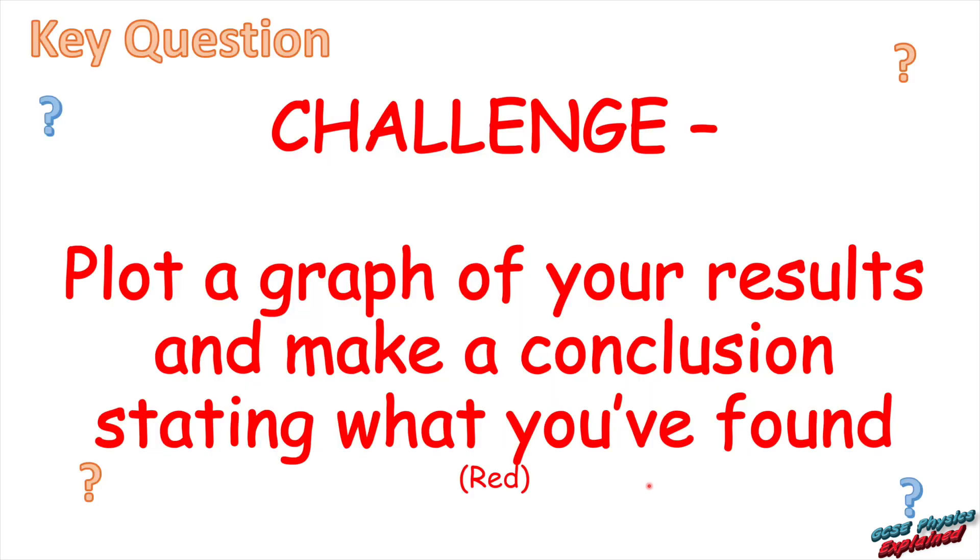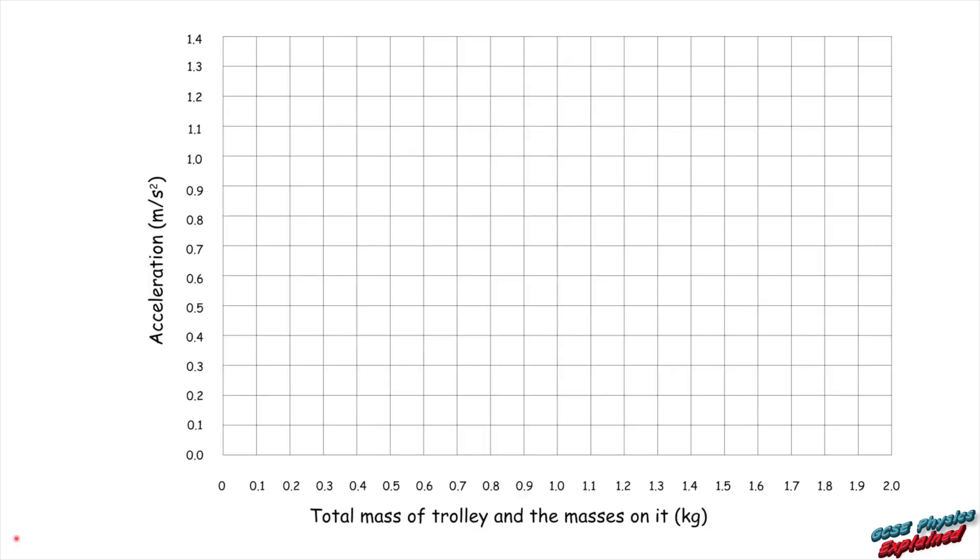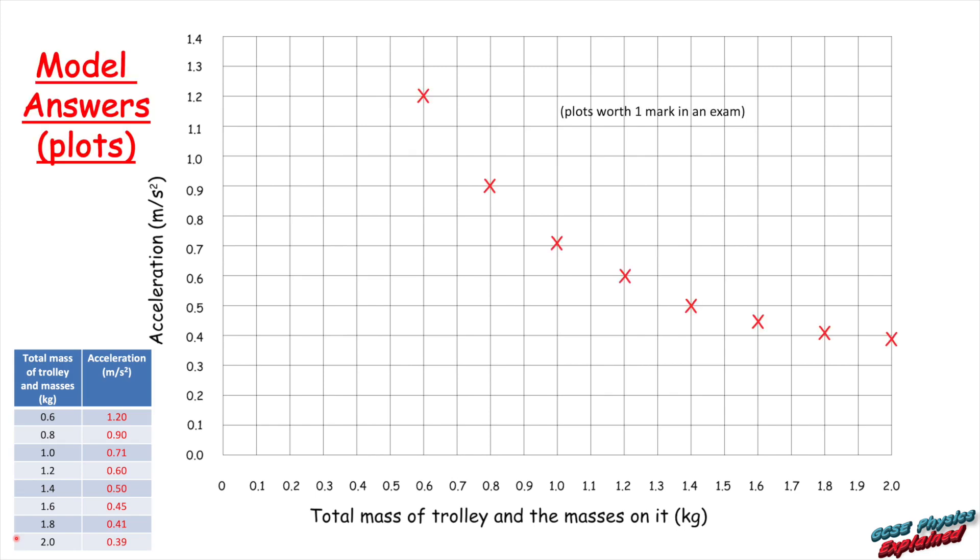And finally, a little challenge. Can you plot a graph of the results and make a conclusion stating what you've found? There's a nice little graph paper for you to use. Take a screenshot. There's the results that you've got to plot. Just for your convenience, I've popped them into the corner. Once you've plotted the results, it should look like that. Now, just to make sure you know how I've done that, I'll show you how I've done the first couple. So the total mass of the trolley is 0.6. So go along to the total mass of the trolley. So that's the trolley and the masses on the back of it. And the acceleration was 1.2. So go up to 1.2 and put your cross on there. And then the total mass of the trolley and the masses on the back was 0.8. So go along to 0.8. And the acceleration was 0.9. So 0.8 was the mass. Go up to 0.9 and put your cross there. And that's how you do that.